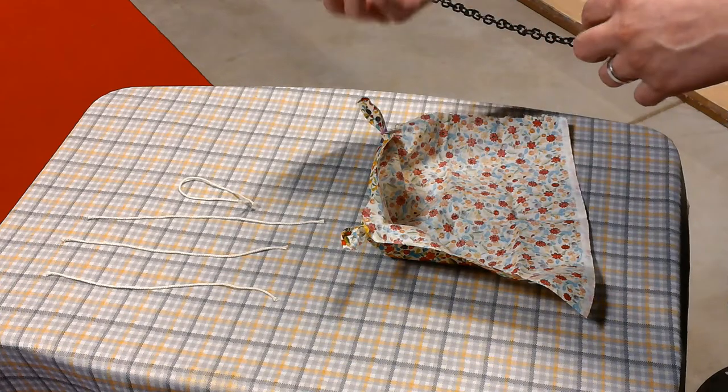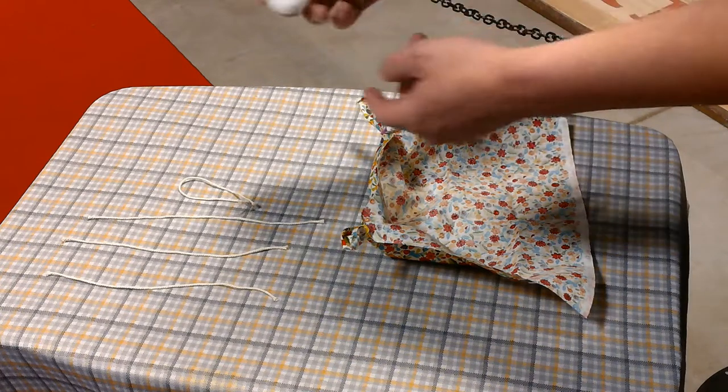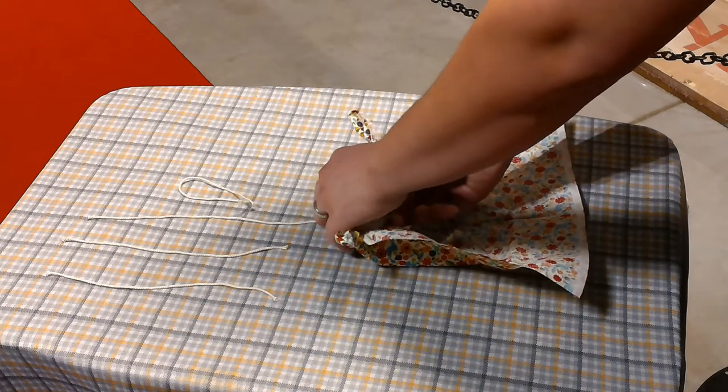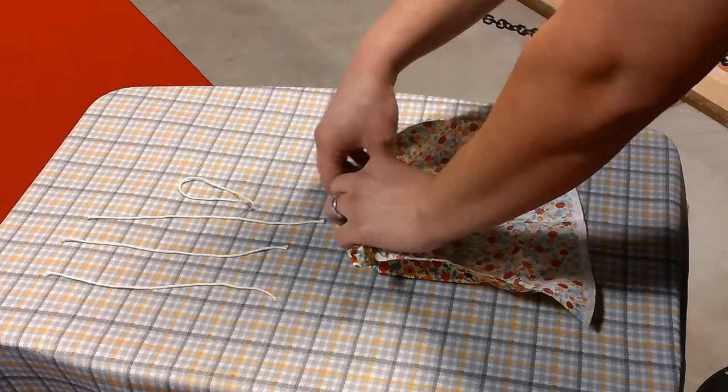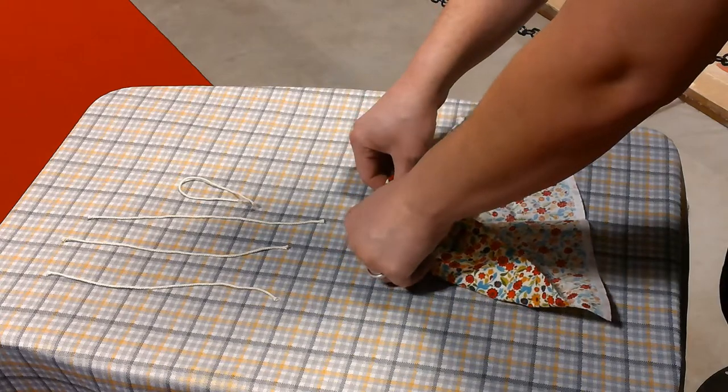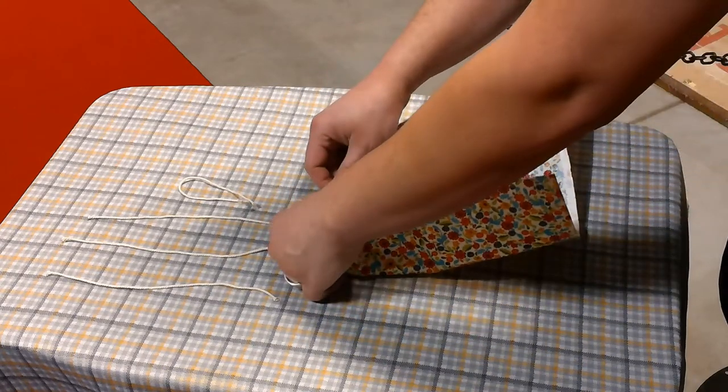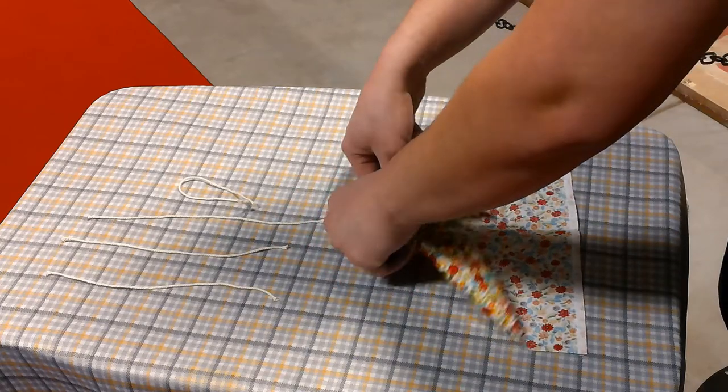Okay, then we're going to take our cotton ball and we're going to simply put the cotton ball over on the bottom, or the top part here, and then we're going to roll it. So we've got our head, we've got our arms, and we're going to roll it just like this.